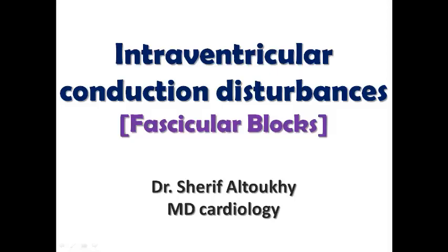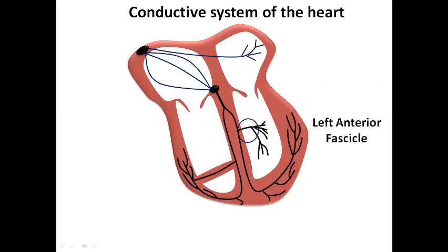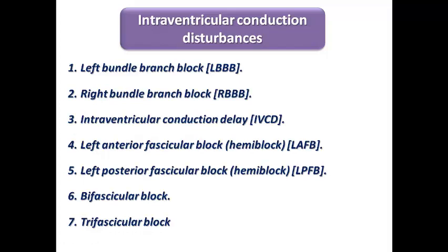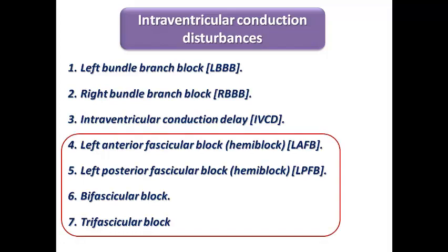Hello everyone and welcome to the second lecture on intraventricular conduction disturbance. Today we are focusing on fascicular blocks — specifically the left anterior fascicle, left posterior fascicle, and Purkinje fibers. We will cover four types: left anterior fascicle block, left posterior fascicle block, bifascicular block, and trifascicular block, after having discussed bundle branch block in the previous lecture.